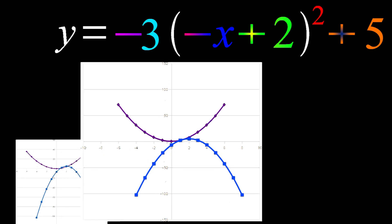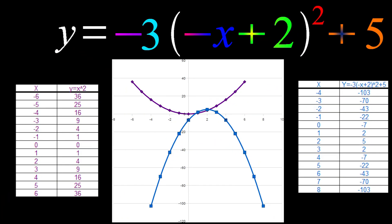The purple table and graph represent just a basic x-squared term, just your run-of-the-mill parabola. The blue table and graph represent that mess we were given at the beginning of this video. So now you can see side-by-side all of those function transformations applied to the final parabolic function.